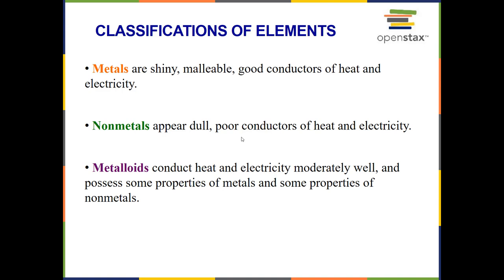Now, nonmetals appear dull. They are poor conductors of heat and electricity. Things like carbon, nitrogen, phosphorus, those are nonmetals. The metalloids conduct heat and electricity moderately well, but they also possess some properties of metals and some properties of nonmetals. And that's why they're right on the border.